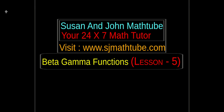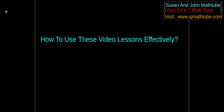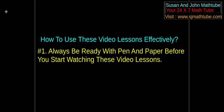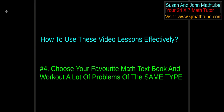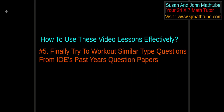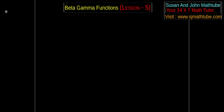Hello friends, welcome to Susan and John Math Tube. This is lesson number 5 in Beta Gamma Functions. As always, use the video lessons effectively — have pen and paper ready, make sure you work out all the problems along with us. Once the video ends, take any math book with the same topic and try to work out a lot of problems. Take past year question papers and try to work out similar questions. If you are able to do it yourself, you have used the video lessons effectively. Let's start lesson number 5.